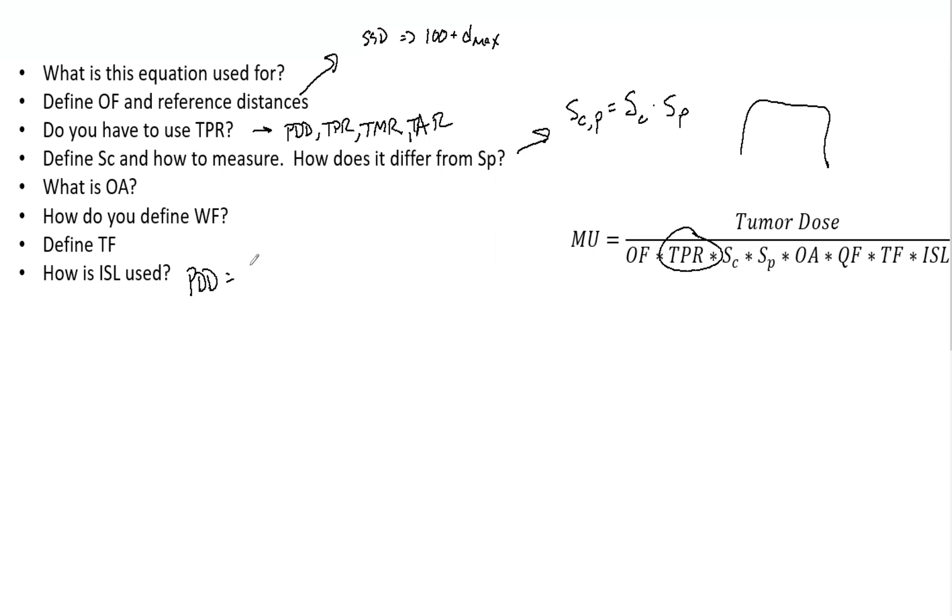And part two, you've done this a ton. Hopefully you know, but maybe just research it and be sure you're atop of it. If you're using PDDs, then you can use an inverse square law of 100 divided by 100 plus D max.